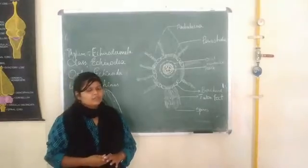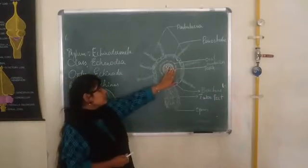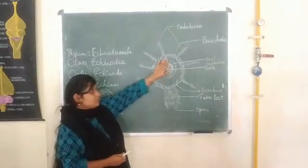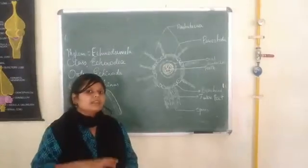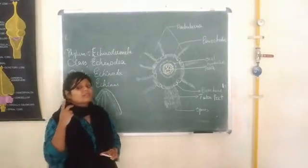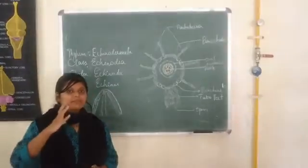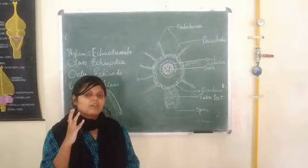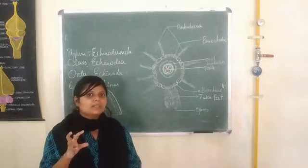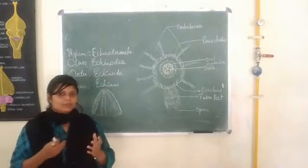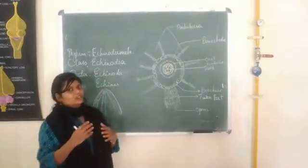The sexes are separate, and external fertilization is seen. The peristome is the region on the oral side, and the periproct is at the opposite end. There are two types of plates in the periproct region: five pairs called ocular plates, which are very small in size, and five pairs called genital plates. These two types of apical plates are found near the periproct region.